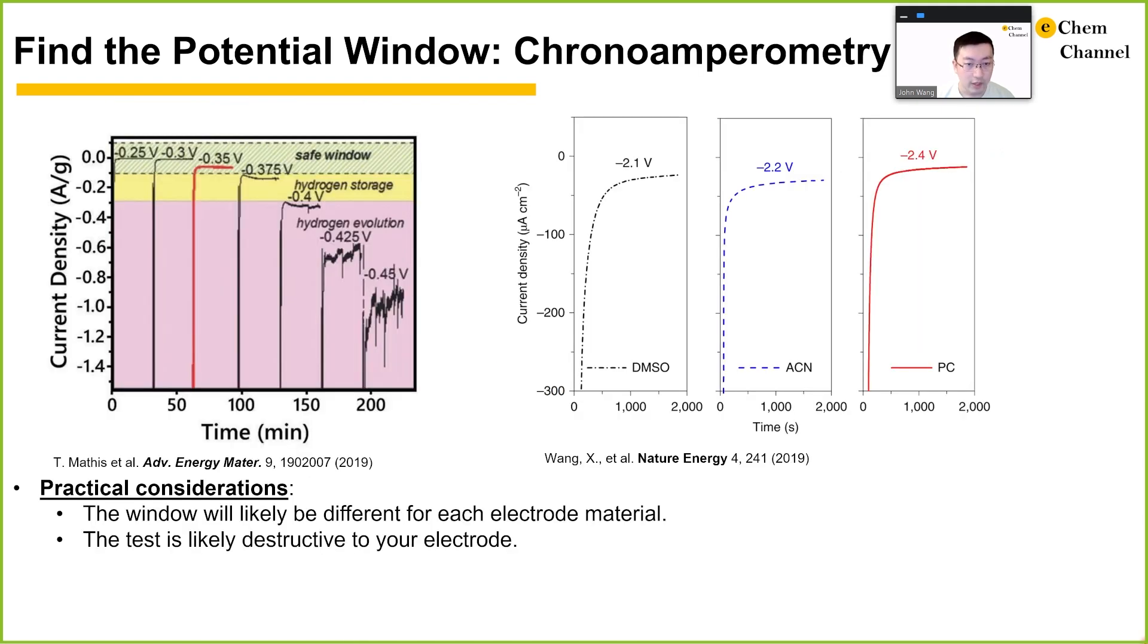For chronoamperometry, the practical considerations are like those for the CV experiments. Be ready to dedicate two electrochemical cells to this experiment. This experiment may be closer to the thermodynamic conditions as more time is given to allow the cell to stabilize.